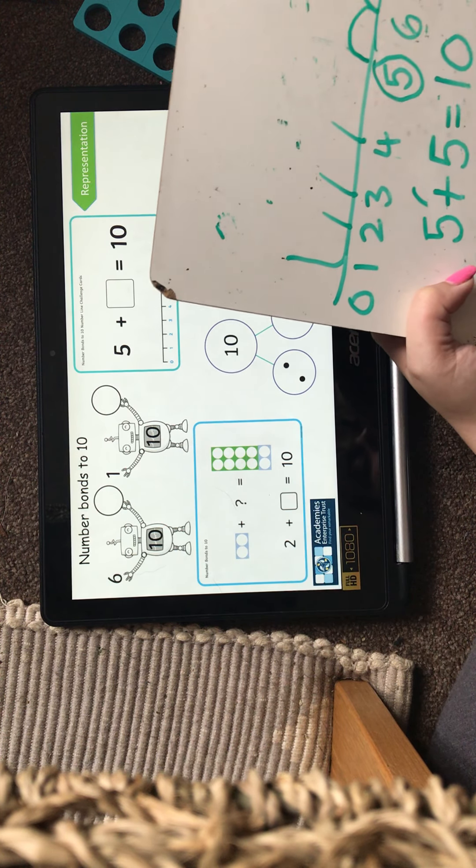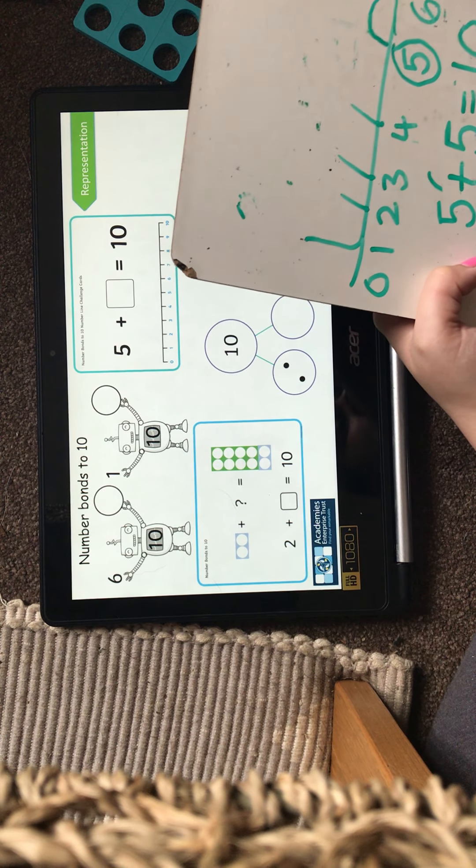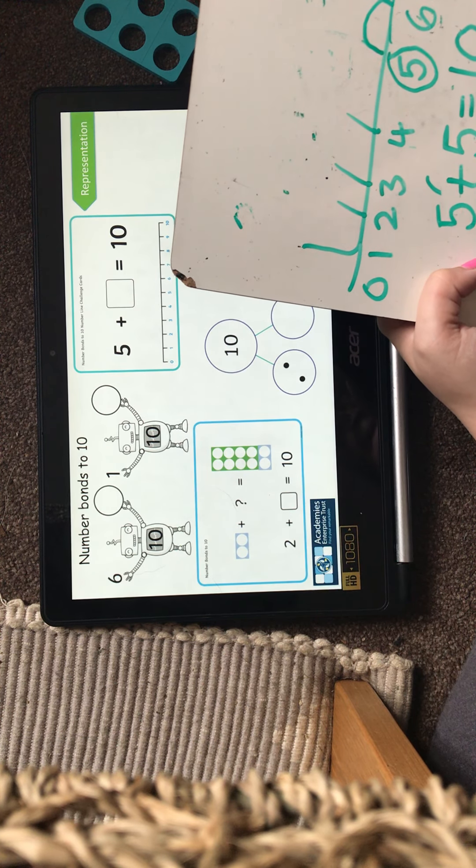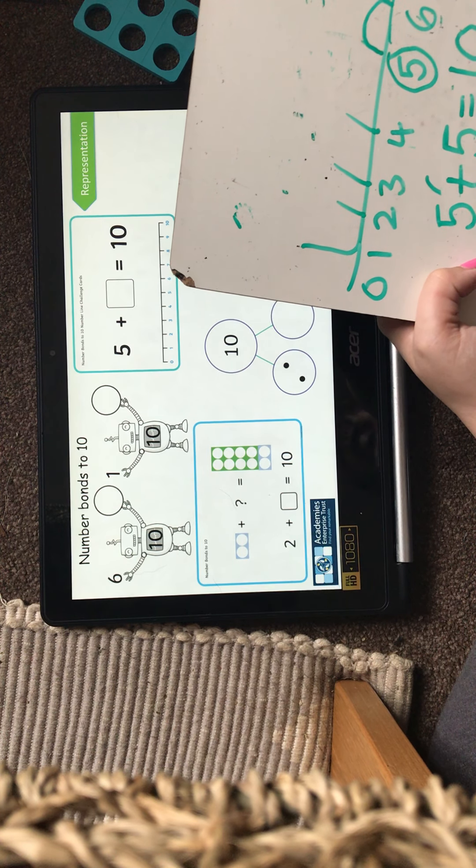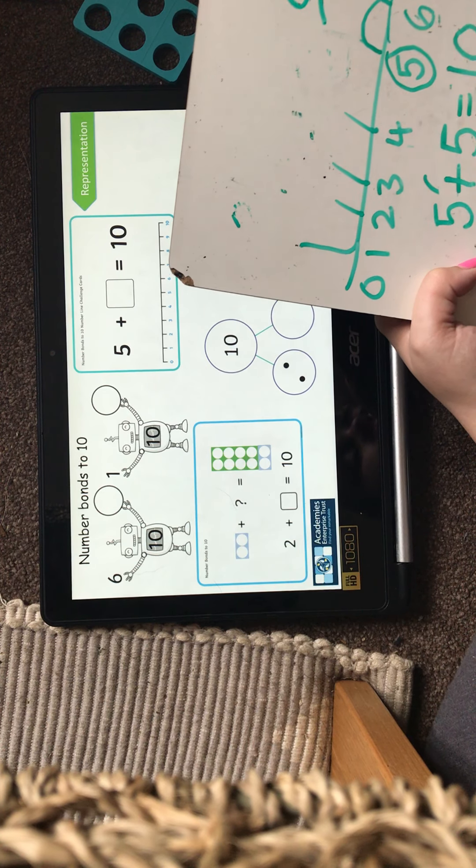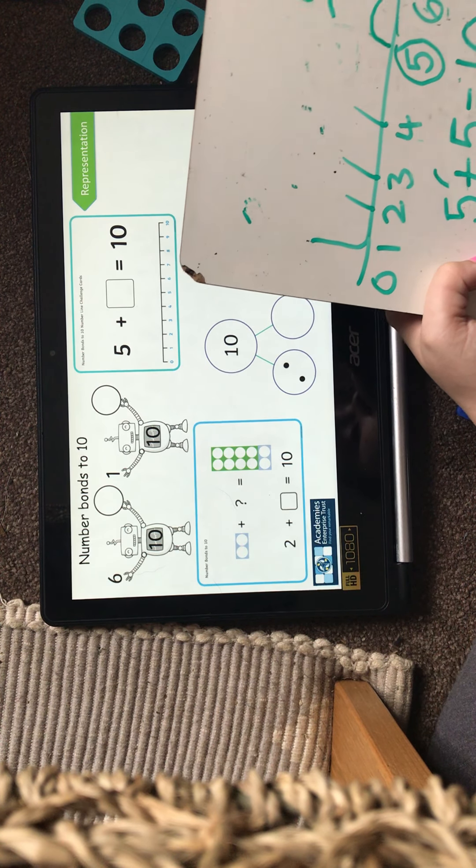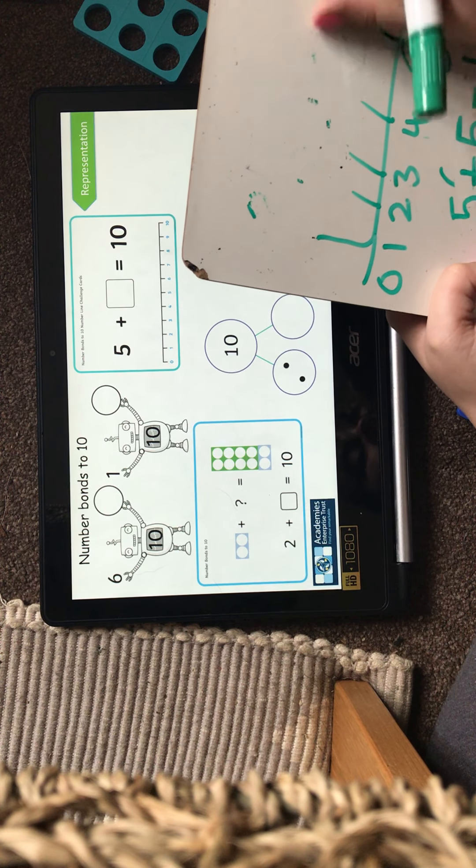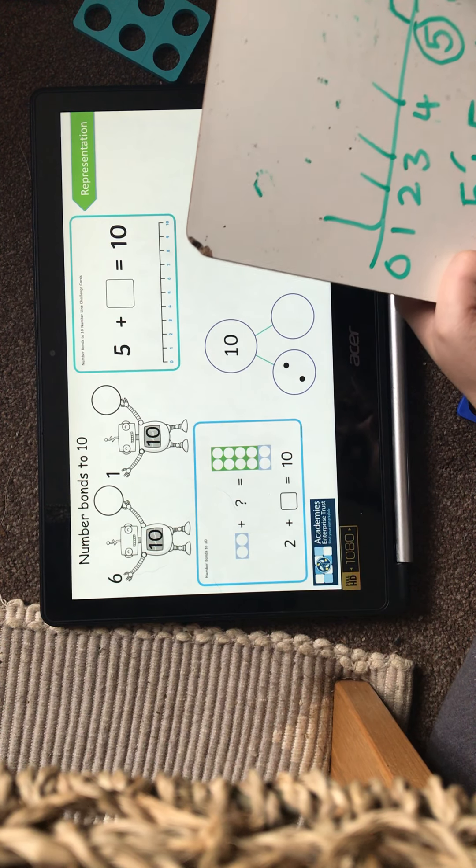So you need to be careful that your numbers are clear. Especially the numbers 2 and 5, because if we don't do these correctly we can maybe get them mixed up. Because some people can flip a 2 and it looks a bit like a 5. So really focus on your number formations and making sure it's clear.